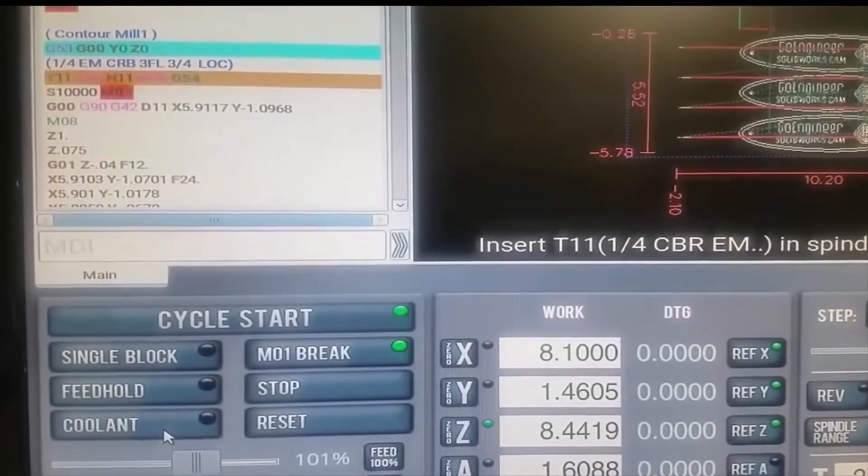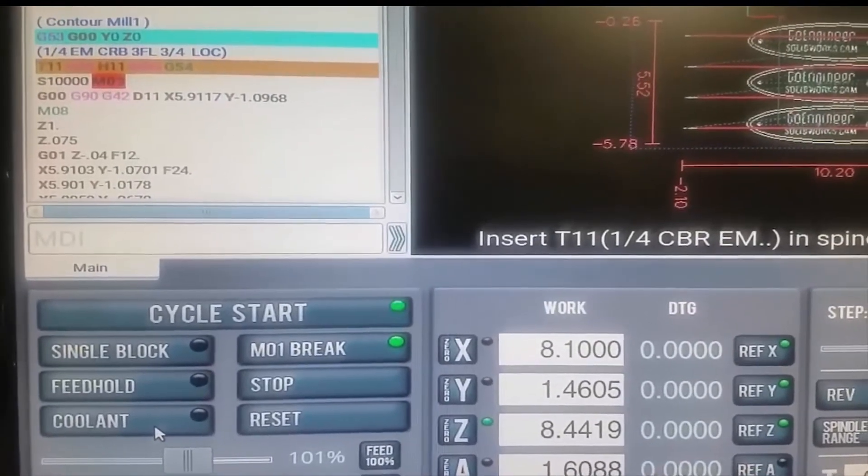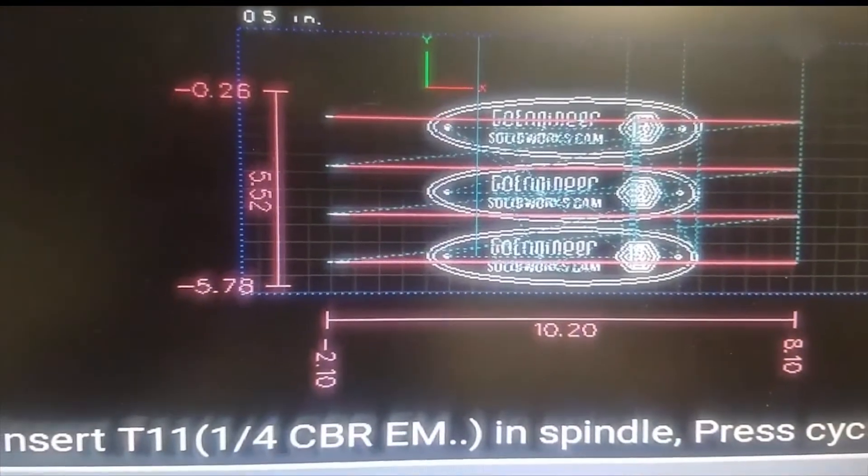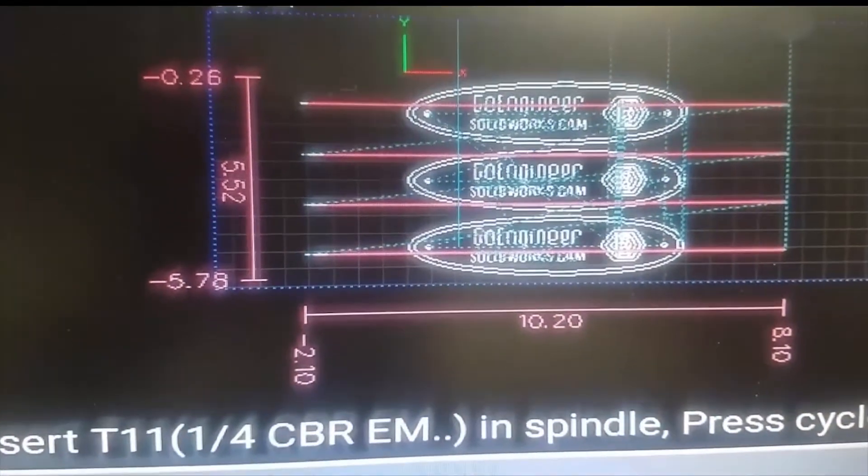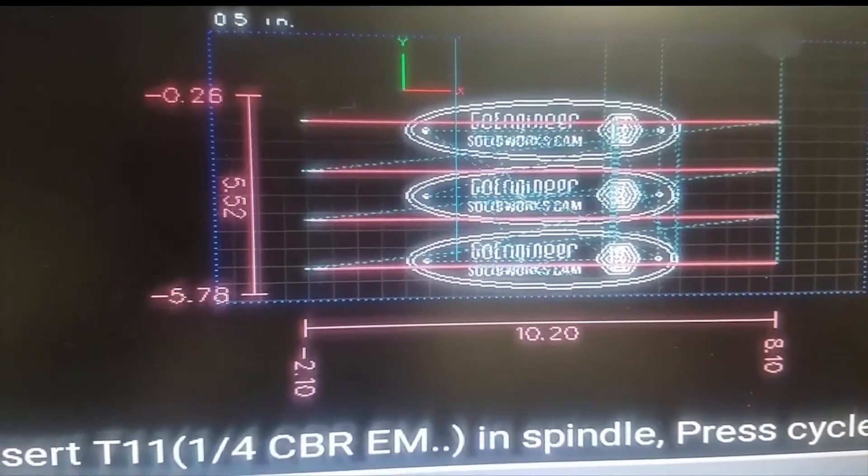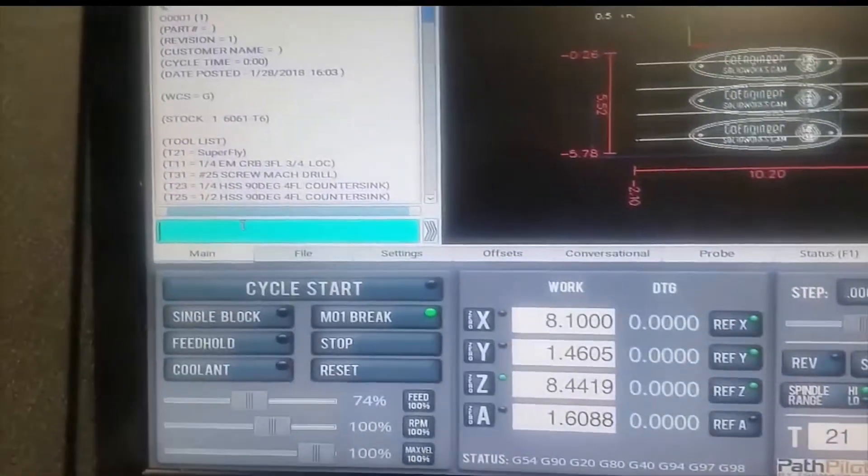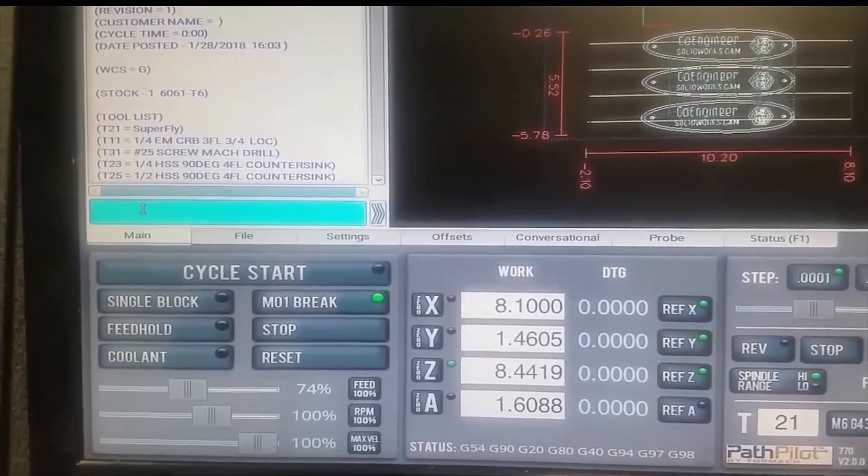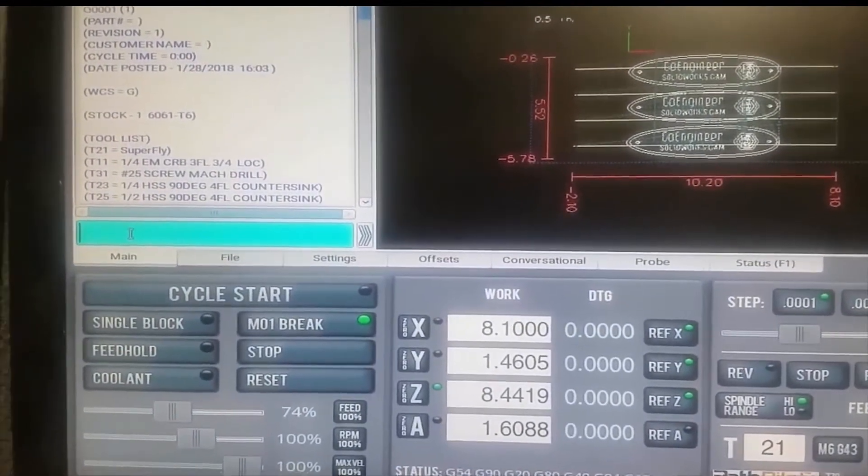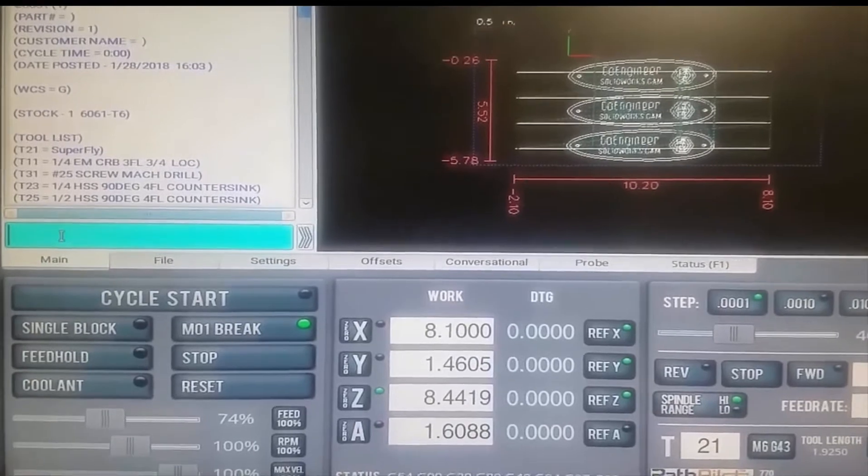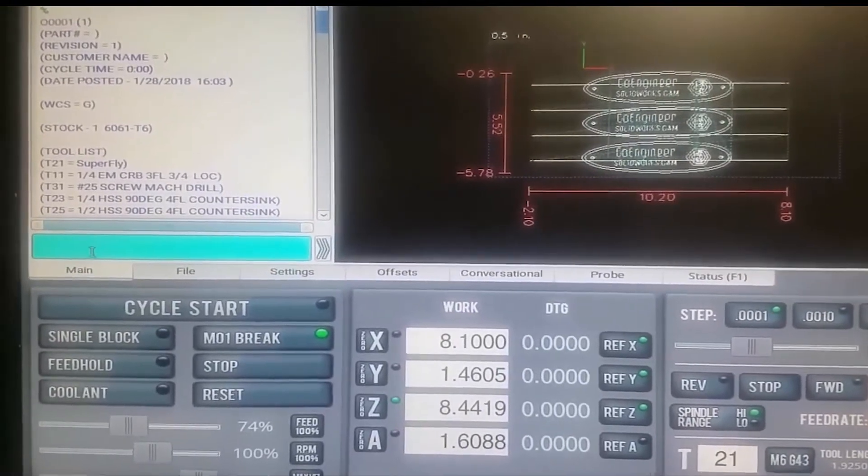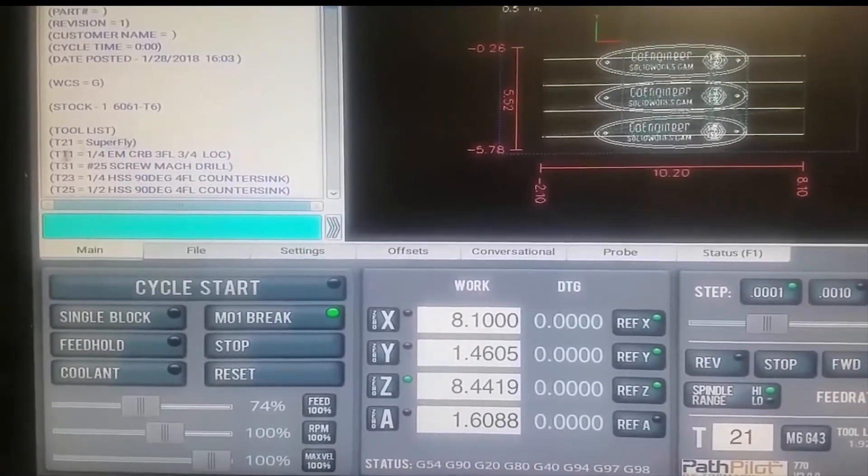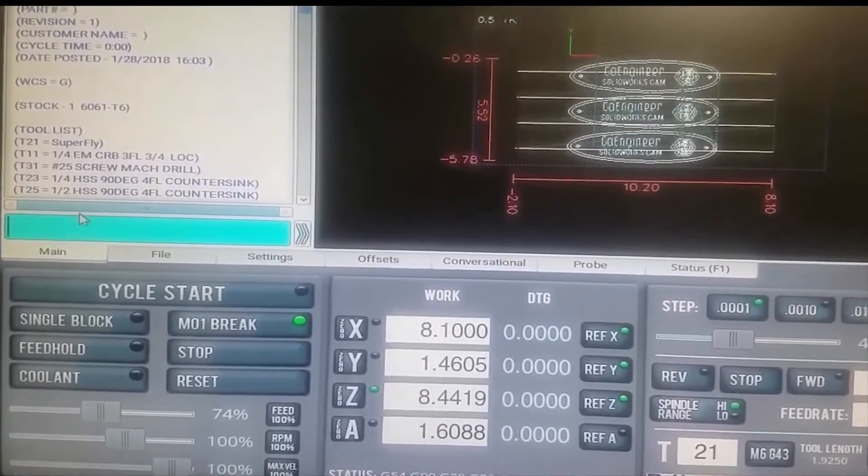Now PathPilot is calling for the next tool T11 which is our one quarter inch end mill. You can also see we get a really nice preview what everything looks like - so the red we've already completed and then the white is what we have to go. Before I started that second op with the quarter inch end mill I wanted to double check something and so I did and I changed a little bit of the program. The problem is now that I've already cut my superfly and I don't want to have to recut it.